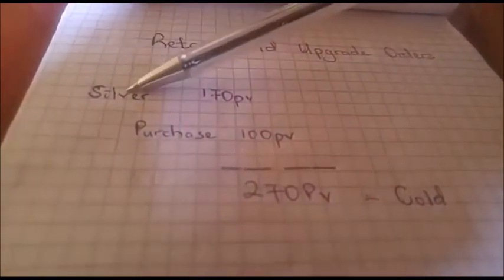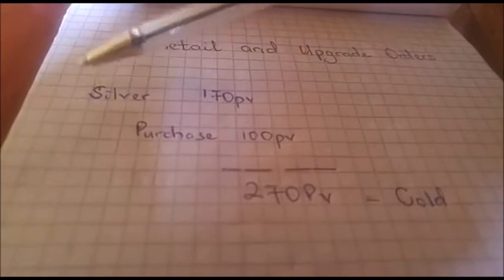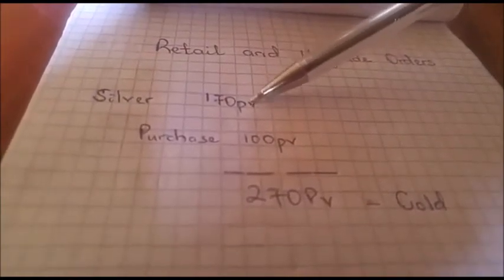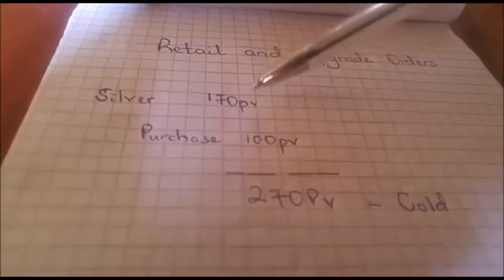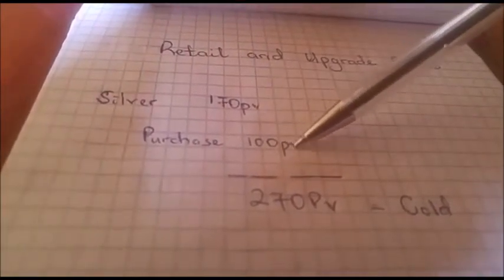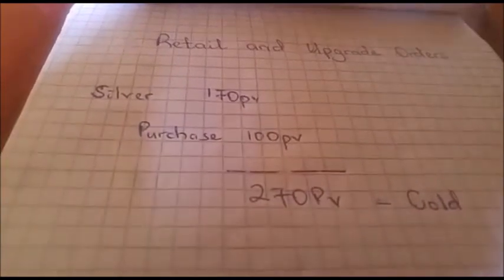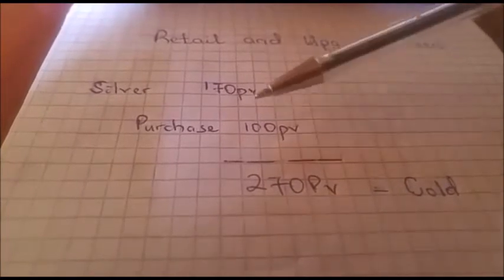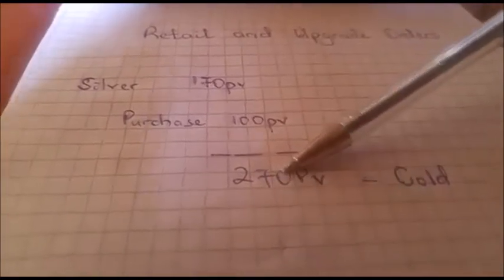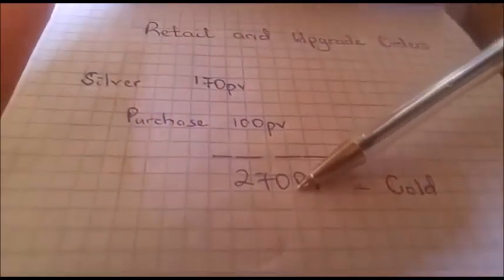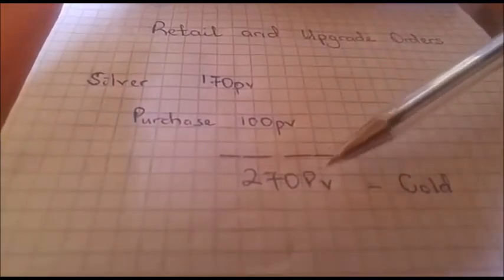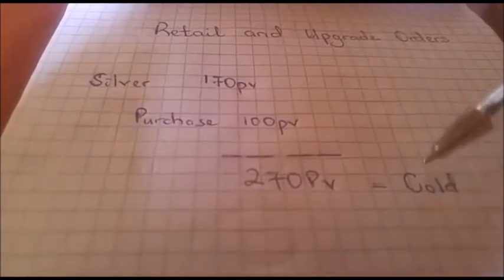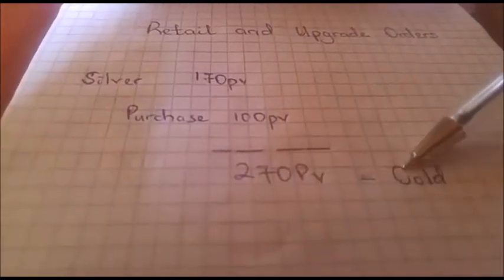Now we are taking the case of an upgrade order. Take for example, you were a silver member. Your status was silver and you had 170 PV already before doing the purchase. If you say you want to do an upgrade order, let's say you want to make a purchase of 100 PV. What's going to happen? The system will sum up 100 PV plus 170 PV, which will give you 270 PV, and automatically your status will change to gold, because gold is at least 240 PV.